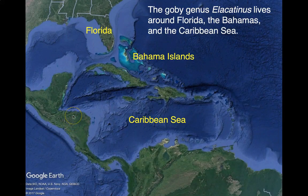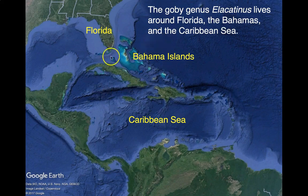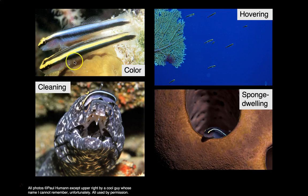For the second handout, you are going to look at the role of behavior and coloration as possible contributors to speciation in a group of coral reef fishes found around Florida, the Bahama Islands, and throughout the Caribbean Sea. These are fishes in the genus Elacatinus. One of the traits you're going to look at is color — the lateral stripe that runs the length of the body, which can be blue, yellow, or white.